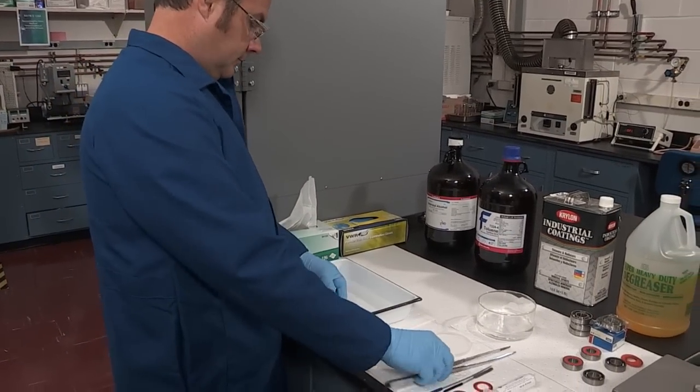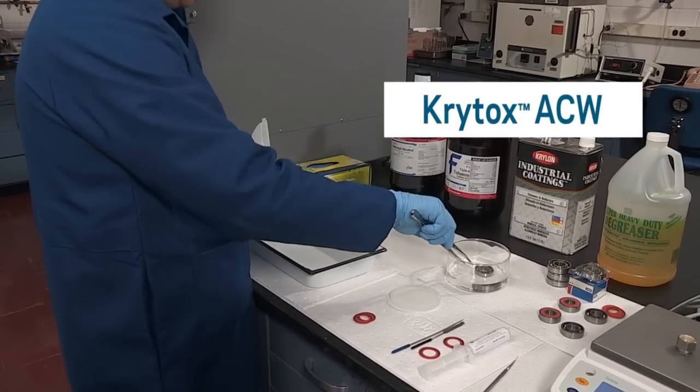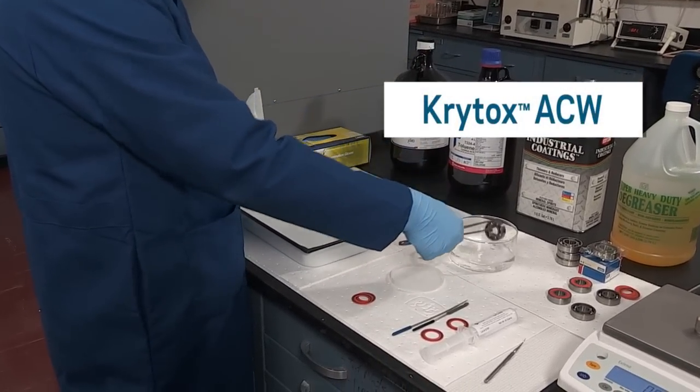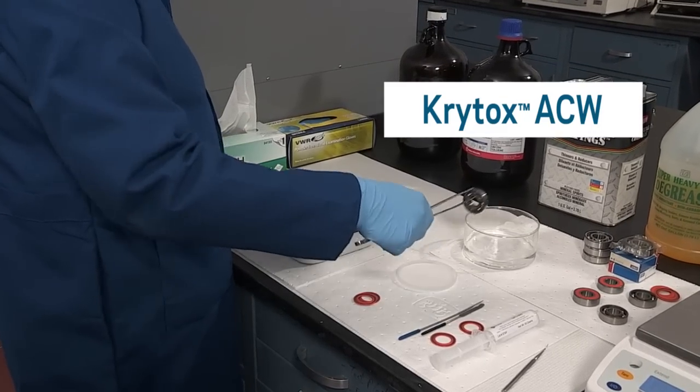To prevent corrosion when stored, immediately lubricate the bearing or dip in Krytox ACW. Using Krytox ACW will help prevent corrosion if the bearing is to be stored for an extended period before lubrication.